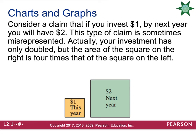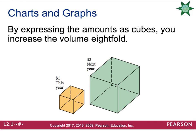Another way they can mislead is with area. If you invest $1 and by next year you have $2, your investment has only doubled. But instead of showing that, they double the side length of the box, giving you a visual of 4 times the money rather than double. They can make it even worse by turning it into a volume problem — if you double each side of a volume, you will actually have a visual of 8 times your money.